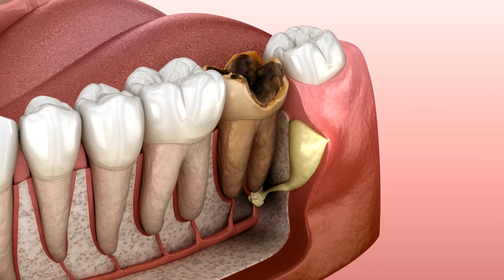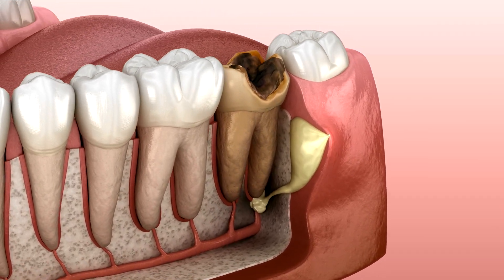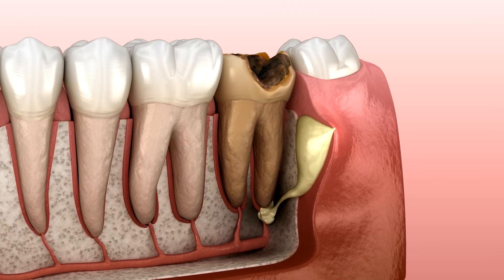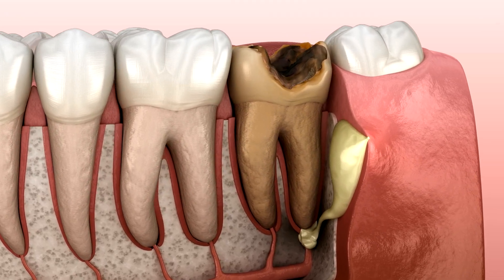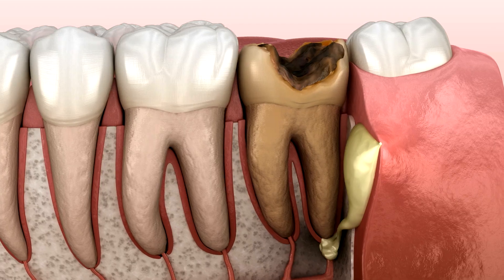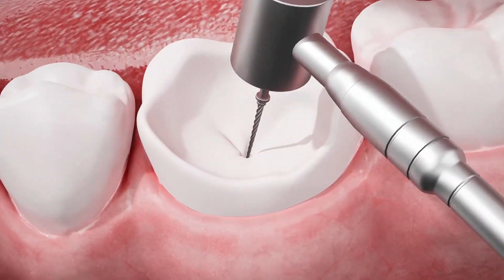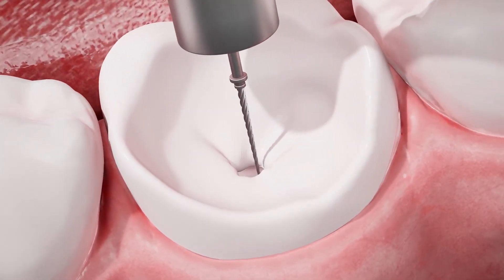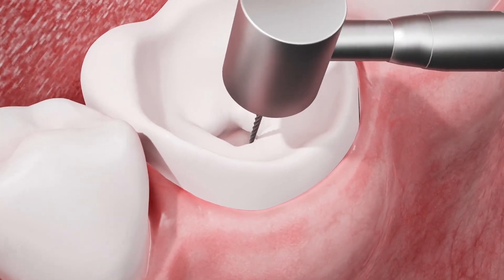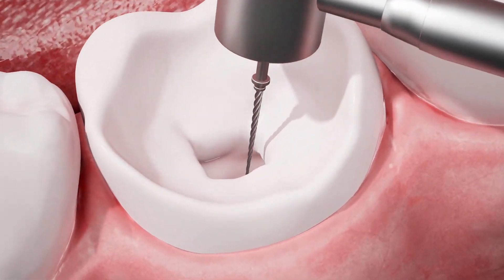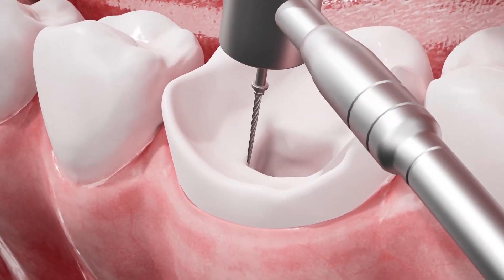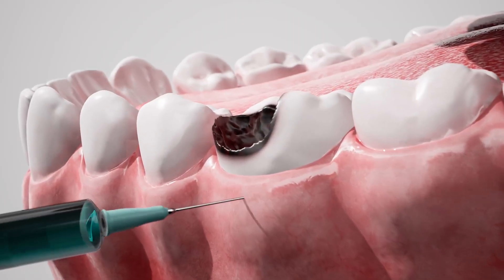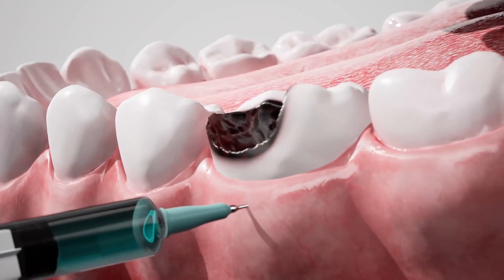Now comes the composite filling application. Unlike older metal fillings, modern composite fillings are tooth-colored materials that blend seamlessly with your natural teeth. Your dentist applies the composite filling in layers, using a special curing light to harden each layer. This creates a strong, durable tooth restoration that looks completely natural.